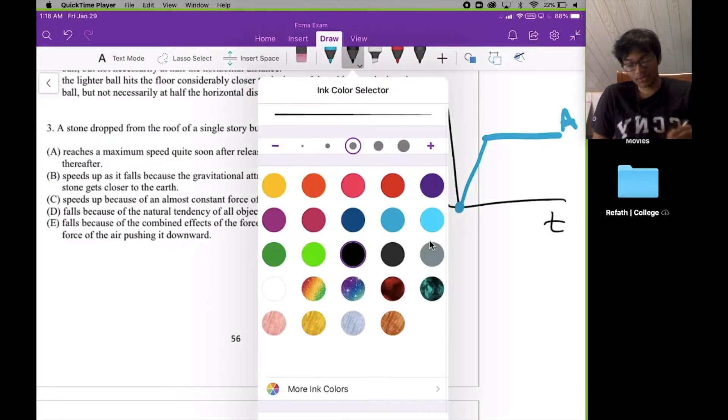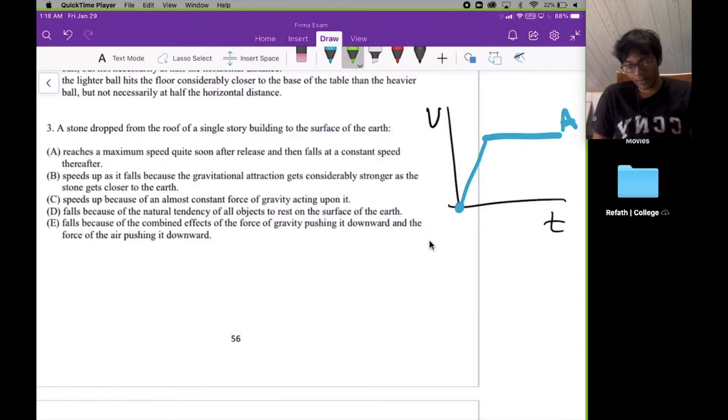Next one, choice B. The stone speeds up as it falls because the gravitational attraction gets considerably stronger as the stone gets closer to the earth. So it's telling us that the stone speeds up basically.